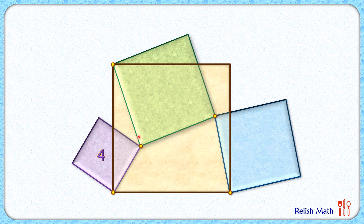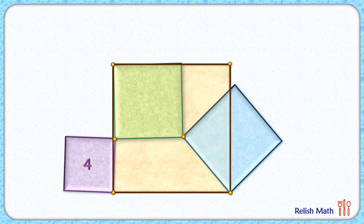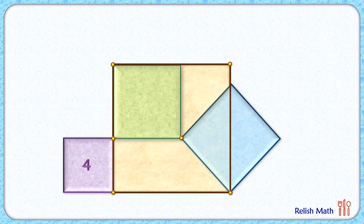So let's rotate the purple square slightly anti-clockwise, so that the green and blue squares also get rotated. Now we are still meeting all the original conditions of the question: the area of the purple square is 4 cm² and the vertices are shared as shown in the original figure. Thus the area of the blue square should not change, otherwise the question itself would become invalid.